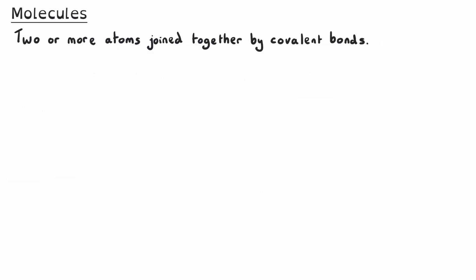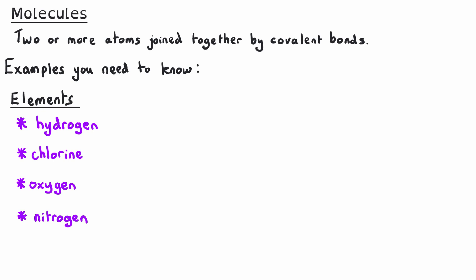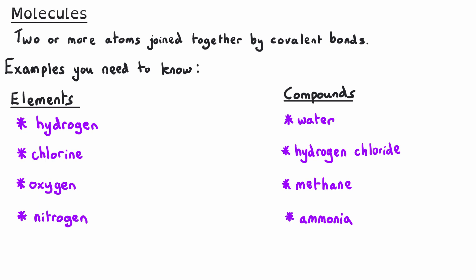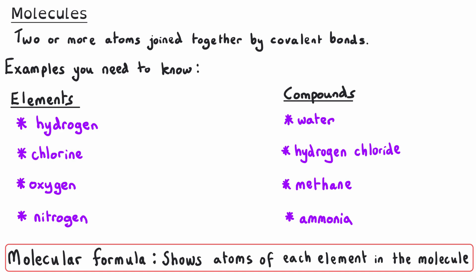The main focus of this video will be small molecules; we will return to the other two in separate videos. Two of the different types of covalent substances are made of molecules. Molecules are formed when two or more atoms are joined together by covalent bonds. There are eight examples you need to know for your GCSE course. Four of them are elements: hydrogen, chlorine, oxygen, and nitrogen. Four of them are compounds — molecules made up of at least two different elements — and those are water, hydrogen chloride, methane, and ammonia. All molecules can be represented by a molecular formula, which shows all of the atoms of each type of element held together by covalent bonds in the molecule.